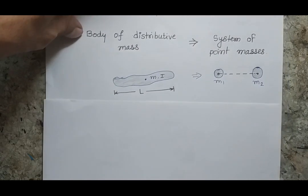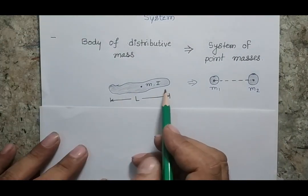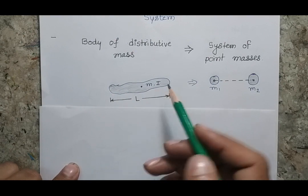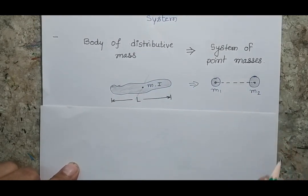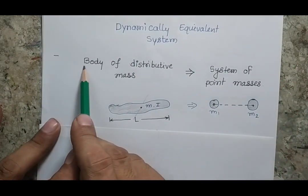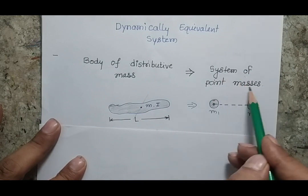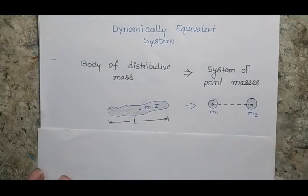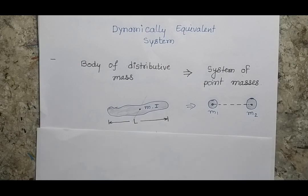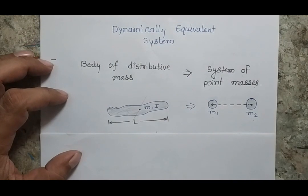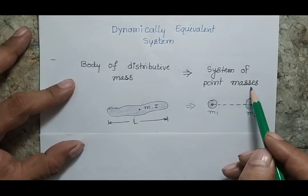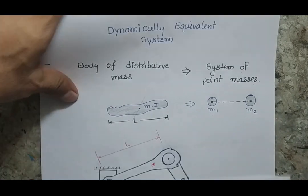Suppose I am having a body which has distributed mass. L is the length of the body, M is the mass of this body, and I is the moment of inertia about this axis. If I apply the principle of Dynamically Equivalent System, I will be able to get an equivalent system of point masses where the masses help us to simplify the system when we do the dynamic study of complex systems. We will understand this when we analyze a connecting rod.